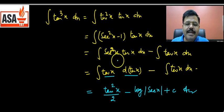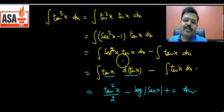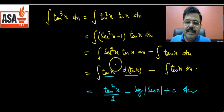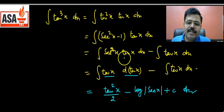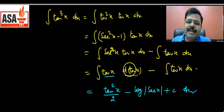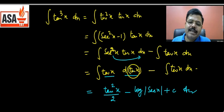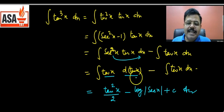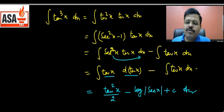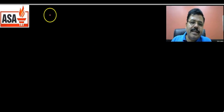This is one way to do it — though substitution can also be used, which we'll discuss later. For now, we are only using transformation. Here, tanx plays the role of x and sec²x dx plays the role of dx.